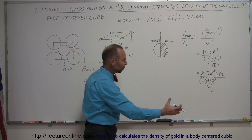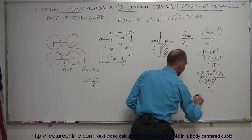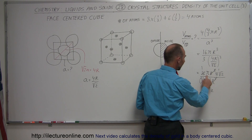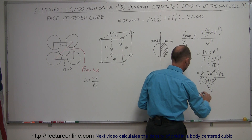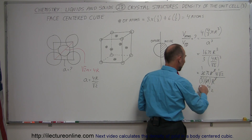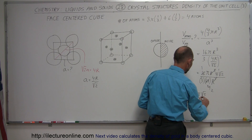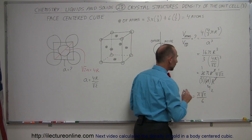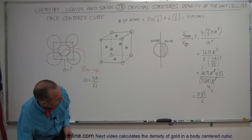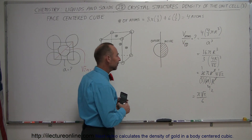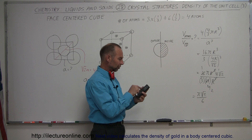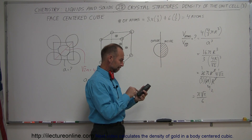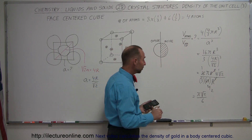After simplification, we get √2 · π / 6. Taking √2 × π ÷ 6 gives approximately 74%. This means 74% of the space in the face-centered cubic crystalline structure is occupied by atoms.